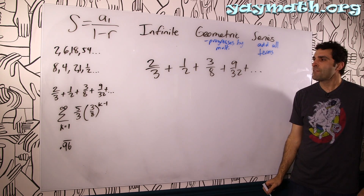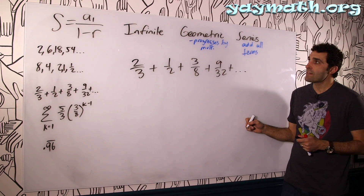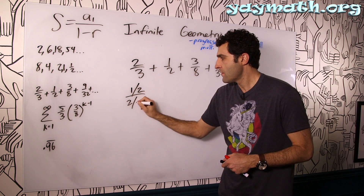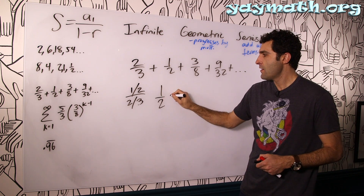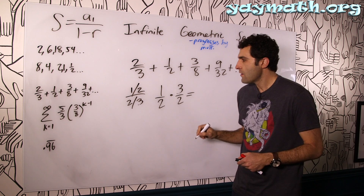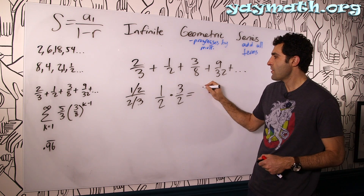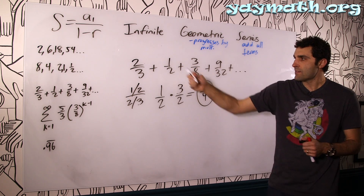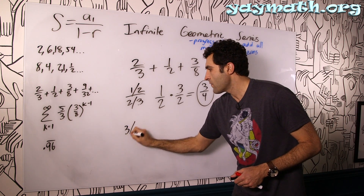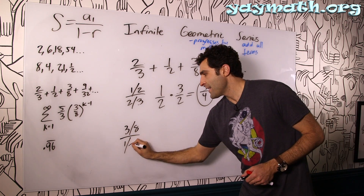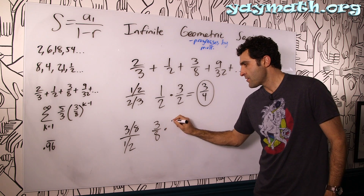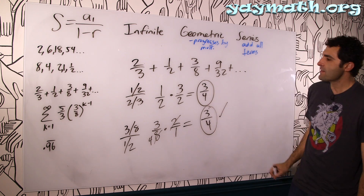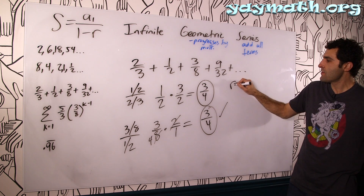This next one looks a little intimidating at first, but we need to first check whether it's geometric. So let's do the test: divide the second term by the first — that's the same as one over two times three over two, which is three over four. If it's geometric, dividing the third term by the second should also give three over four. Indeed it does — three over eight times two over one is three over four. So this is confirmed to be a geometric sequence with rate of growth r equals three over four.